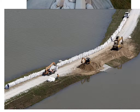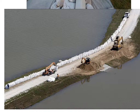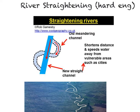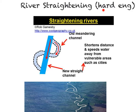So in your notes where it talks about levees, that gives you a clear understanding of how they work and what they look like in real life. The next strategy relating to the Mississippi is river straightening — again a hard engineering strategy.